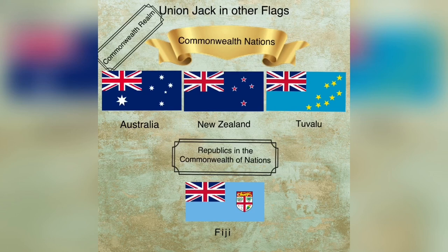The Commonwealth realm consists of sovereign states where Queen Elizabeth II or her successors are still the reigning constitutional monarch or head of state, while the republics in the Commonwealth nations, as the name suggests, are full-fledged republics just like India.